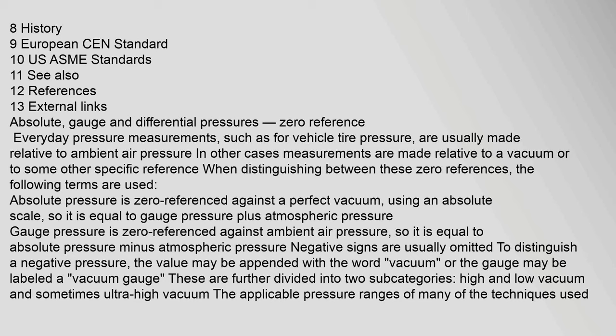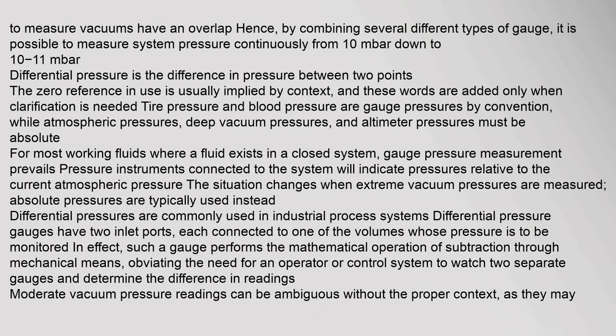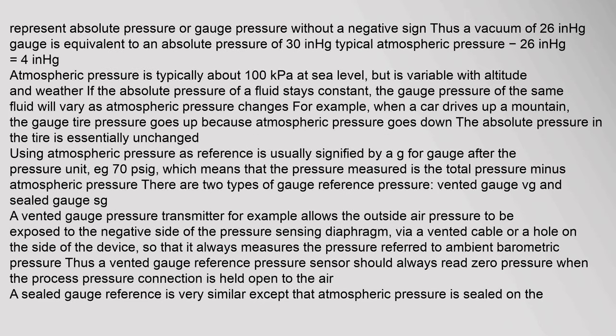These are further divided into two sub-categories: high and low vacuum, and sometimes ultra-high vacuum. The applicable pressure ranges of many techniques used to measure vacuums have an overlap; hence, by combining several different types of gauge, it is possible to measure system pressure continuously. A vacuum of 26 in Hg gauge is equivalent to an absolute pressure of 4 in Hg (30 in Hg typical atmospheric pressure minus 26 in Hg). Atmospheric pressure is typically about 100 kilopascals at sea level, but varies with altitude and weather. When a car drives up a mountain, the gauge tire pressure goes up because atmospheric pressure goes down, while the absolute pressure in the tire is essentially unchanged.